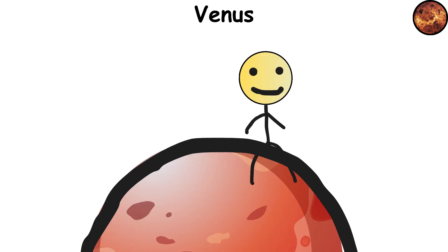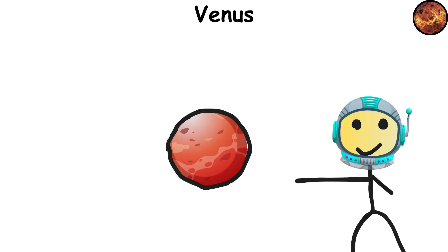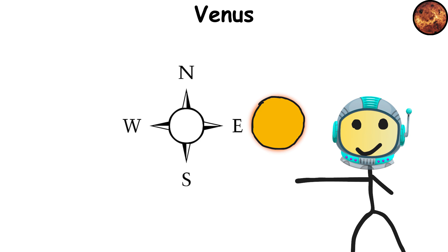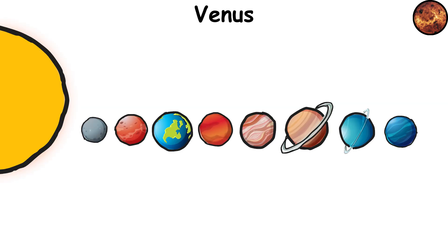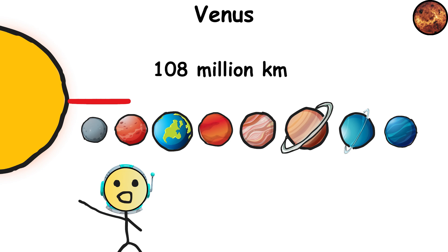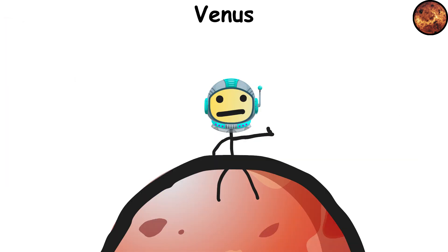And don't even think about catching a breeze. The air here is mostly CO2, with some sulfuric acid clouds for that extra spicy touch. Venus also spins backward, so the sun rises in the west and sets in the east, just to keep things weird. Distance from the sun? 67 million miles, 108 million kilometers. As for life? Unless you're into acid rain and suffocating heat, better pass on this one.